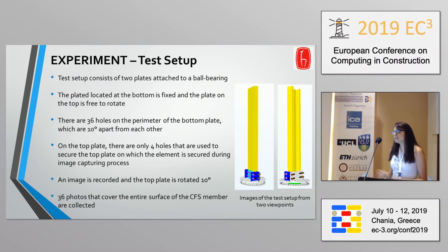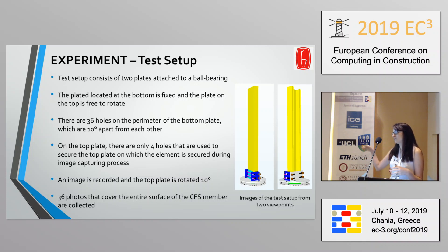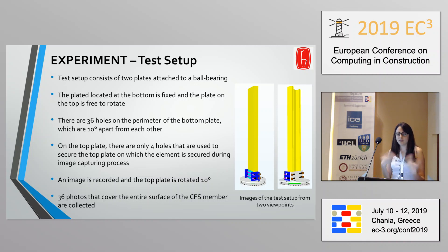The experimental setup is very simple. We have two plates connected with a ball bearing which allows us to rotate the member at certain angle values. In this case we are taking 36 pictures, so it has 36 holes. We fix it at every 10 degrees, take one picture, and then repeat it for different elements.